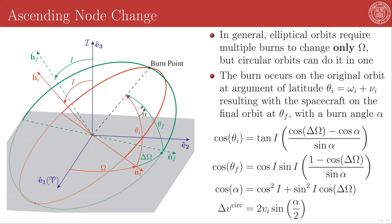In essence, your first burn would change the inclination along with the ascending node. And then your second burn would change the inclination back and induce another change to the ascending node, which would hopefully get you to where you need to go.